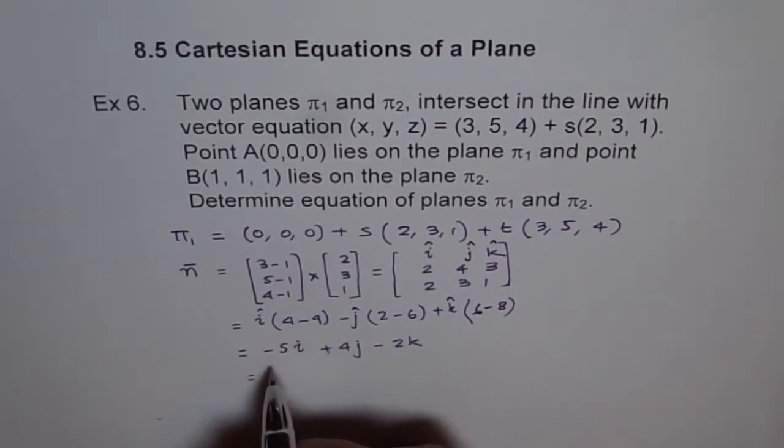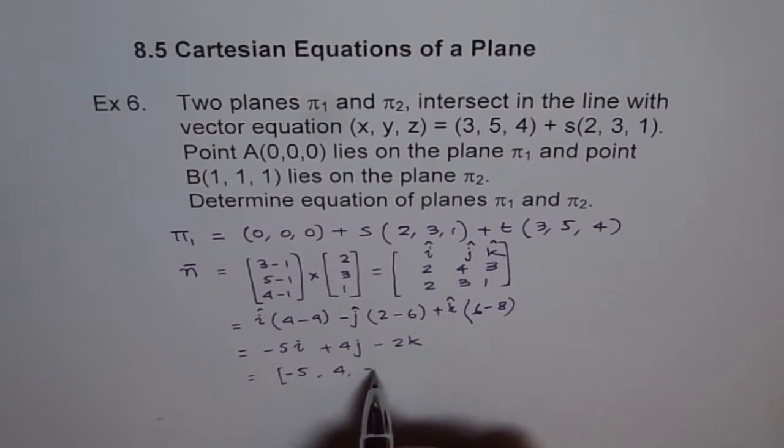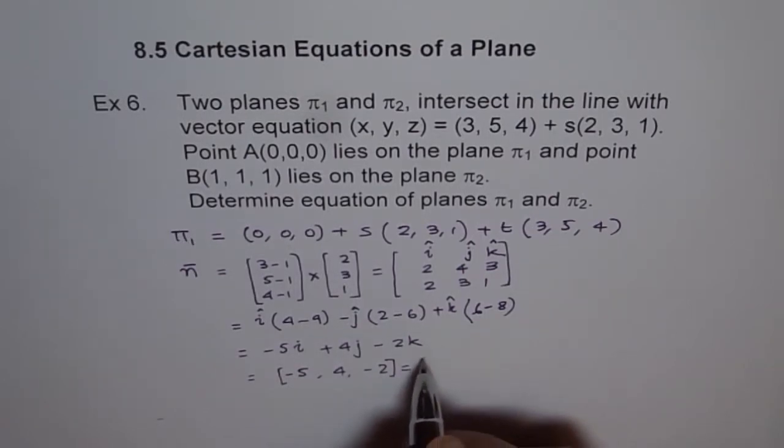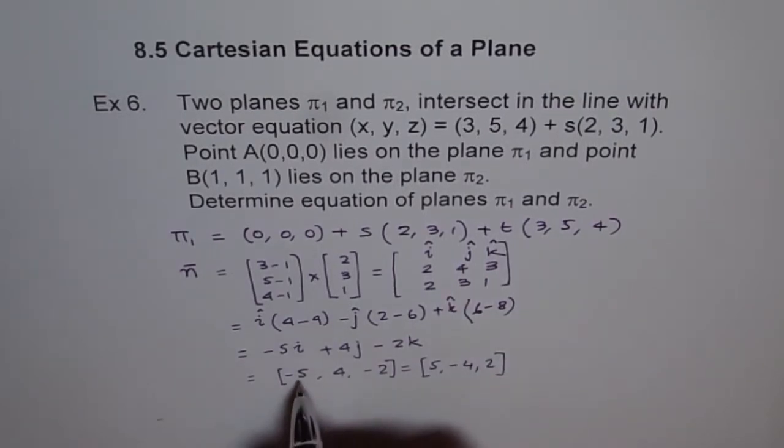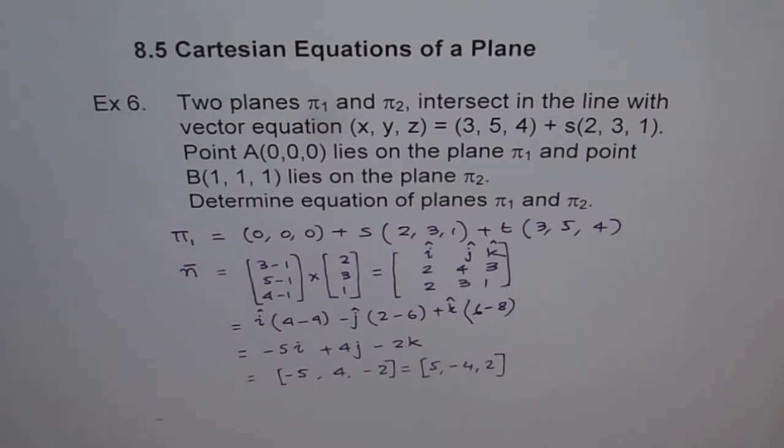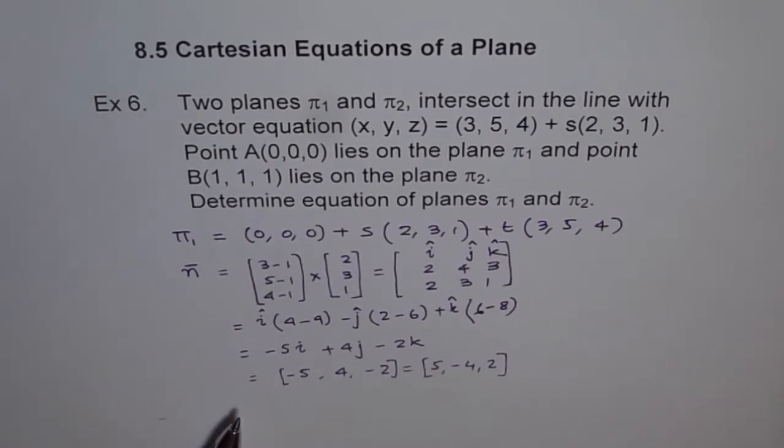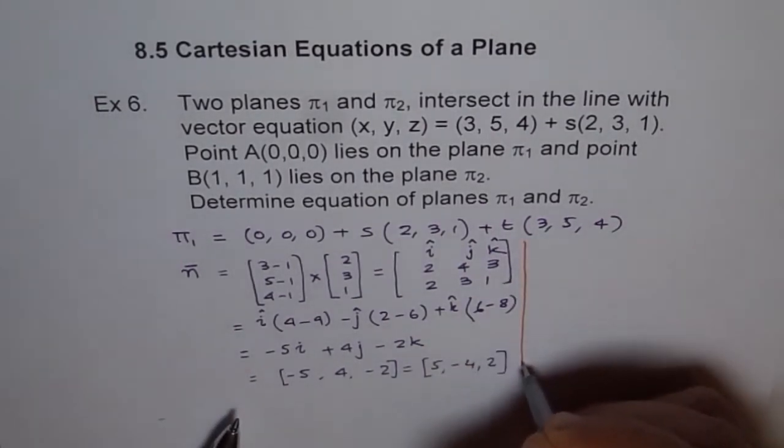From here, we can write -5i plus 4j minus 2k. That is the vector which we get for this point: (-5, 4, -2). We can take minus common, so the vector we actually get is 5, -4, 2. Normally it is better to write this positive. So we got a normal vector to our standard Cartesian equation, and we can use this point.